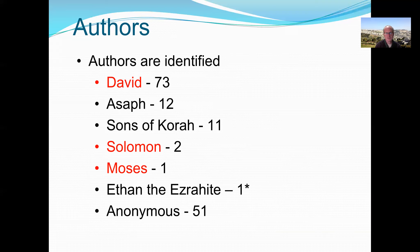Asaph apparently had a musical role at the time of David, but there are a couple of Asaphs in the Bible, some from much later periods, and some psalms of Asaph show signs of later composition. The Sons of Korah were descendants of Korah, a Levite who rebelled against Moses, but whose sons continued in Levitical and worship roles — though we don't know exactly when those psalms date to. Ethan the Ezrahite's psalm also involves the Sons of Korah. About 51 psalms remain anonymous.